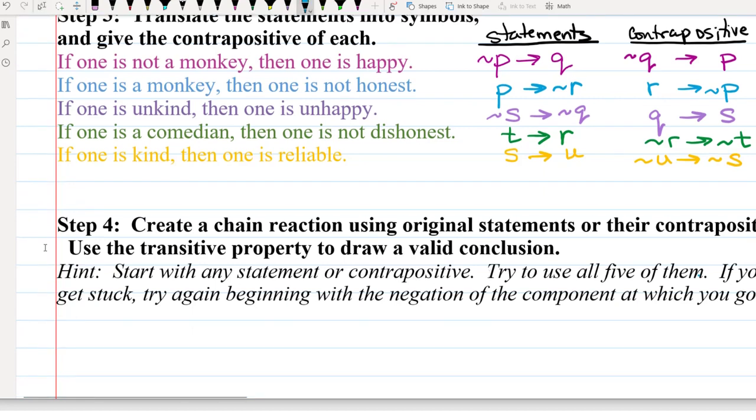Let's say that I wanted to start with the component P. So if I look through my statements, the one in blue, P implies not R, starts with P. And then I would have to, following on not R, find a statement that starts with the negation of R, which the one in green, the contrapositive version, starts with not R. So from not R, it would follow not T. But then at that point, I would be stuck because there is no other statement that starts with a negation of T.